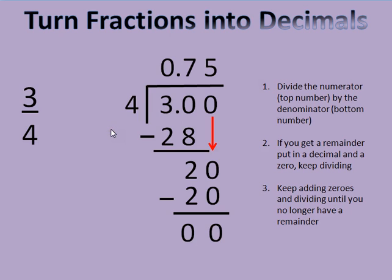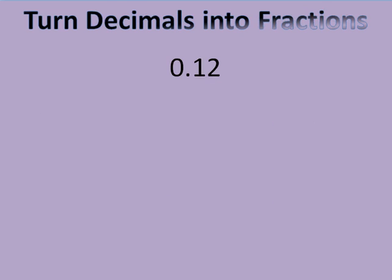Sometimes I'm going to be asked to go the opposite way, turn decimals into fractions. Now, this is point one-two, or twelve-hundredths. So that's pretty easy. I just put my twelve over my hundred, because that's twelve-hundredths. Okay, I know by my place value. Tenths, hundredths.